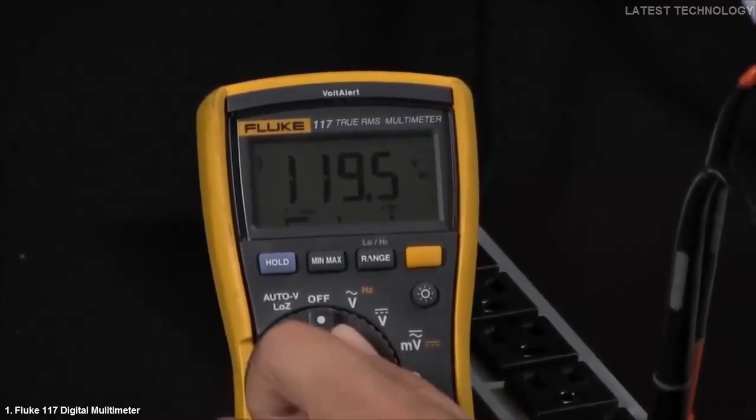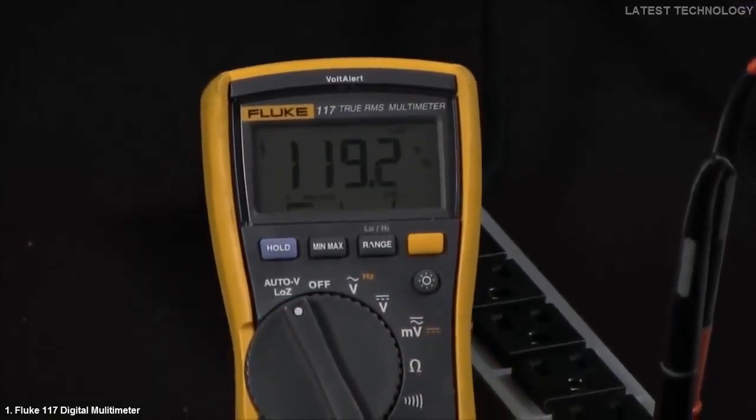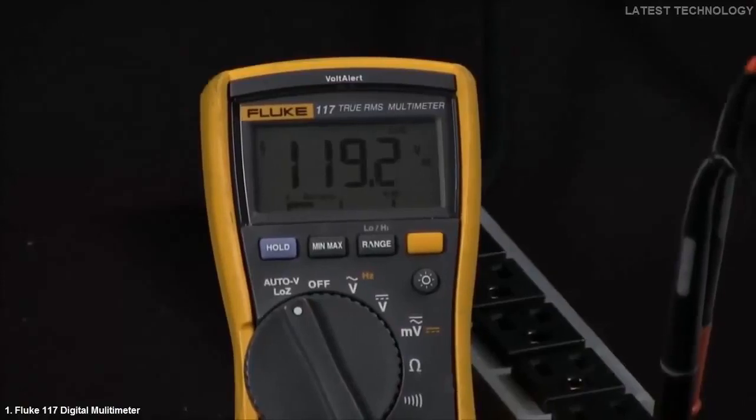In our second step, we'll go ahead and turn this to the low impedance setting. And you're still going to have a true voltage reading of 120 volts.